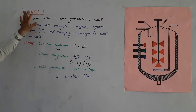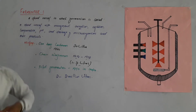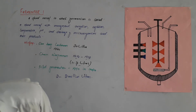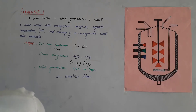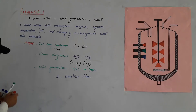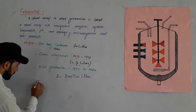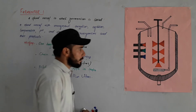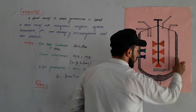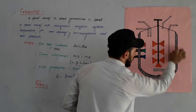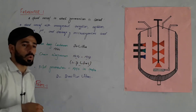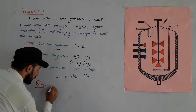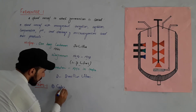So that was a brief history of fermenters. Now let's look at the parts of a fermenter. Number one part is the cooling jacket. The cooling jacket is located on the outside of the fermenter vessel.